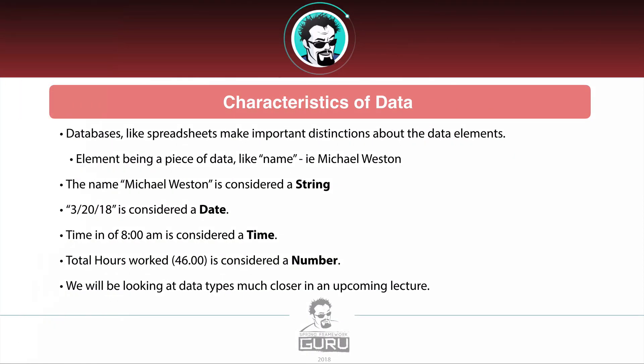One of the things that databases do, like spreadsheets, is make important distinctions about data elements. A data element is a piece of data — like a name, in this case Michael Weston, which is considered a string. The date March 20th, 2018 is a date object, and that's different from a time object — a time of 8am is a time, not a date. These are two distinct data types. Total hours worked, like 46.00, is a number, which has different properties than a string or a date. For instance, I can add numbers, but if you try adding strings, bad things or unpredictable results will occur.